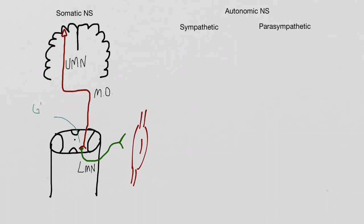The excitatory neurotransmitter found between the upper motor neuron and the lower motor neuron is called glutamate. The neurotransmitter released from the lower motor neuron is called acetylcholine. The target receptor found at the neuromuscular junction is a nicotinic cholinergic receptor.